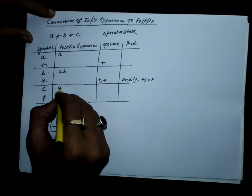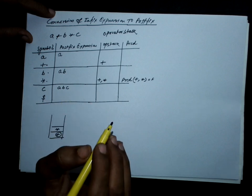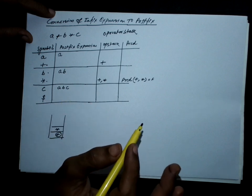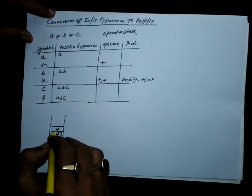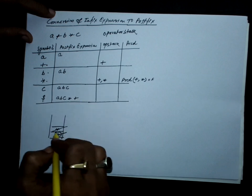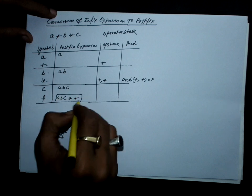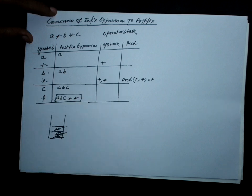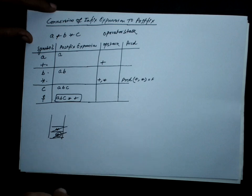Then we have C, which is an operand, so it is added to the postfix expression. Then dollar means the end of the expression — no more symbols. So we pop the stack one by one and add each symbol to the postfix expression. This completes the conversion: we had an infix expression and we have found the postfix expression.